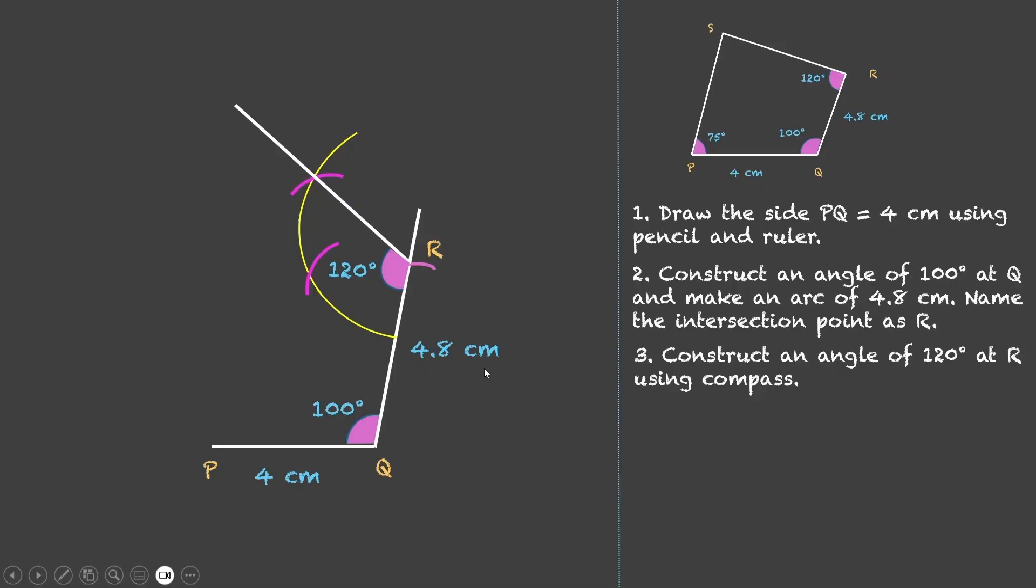Next step is to construct an angle of 75 degrees at P using compass such that when we make this angle it should intersect the angle of the previous step at S. Now 75 degrees is a standard angle.